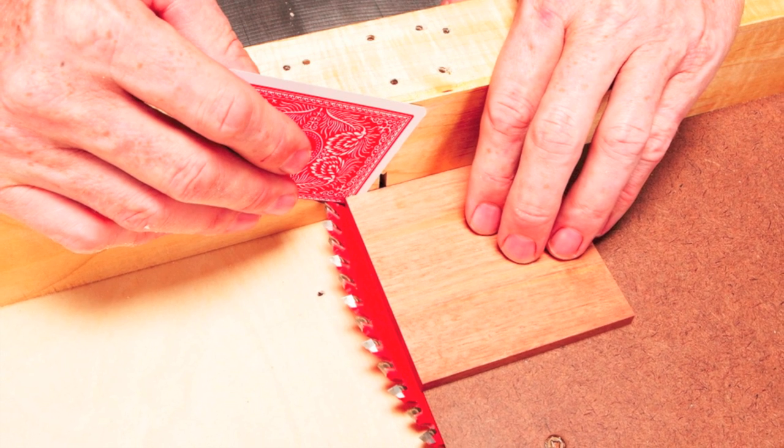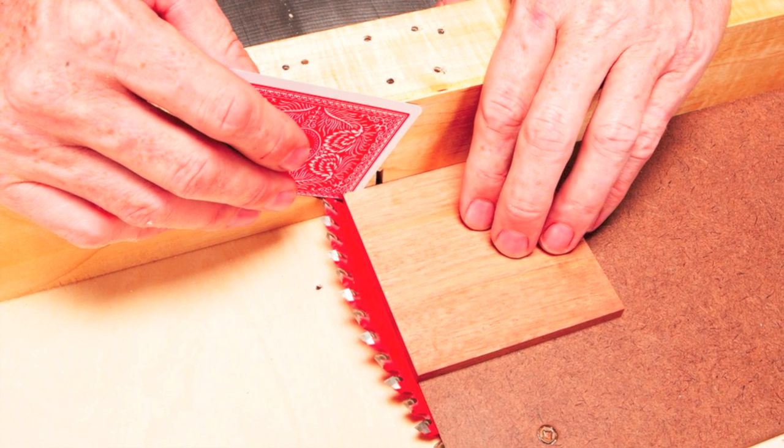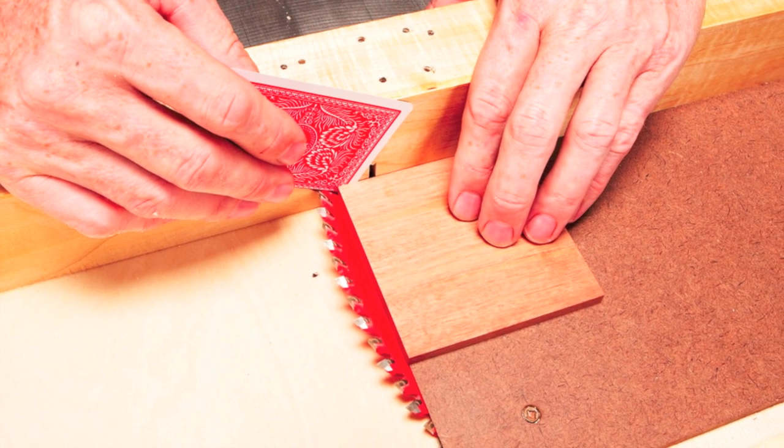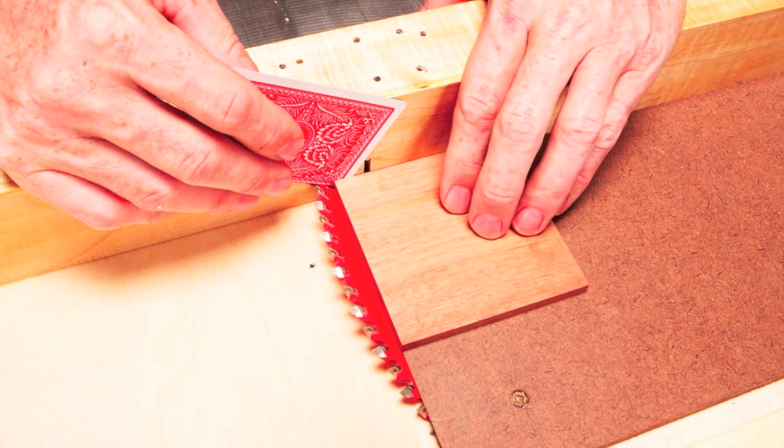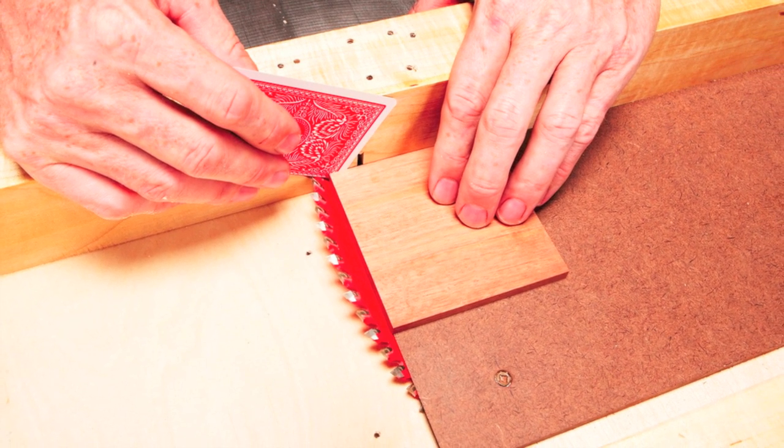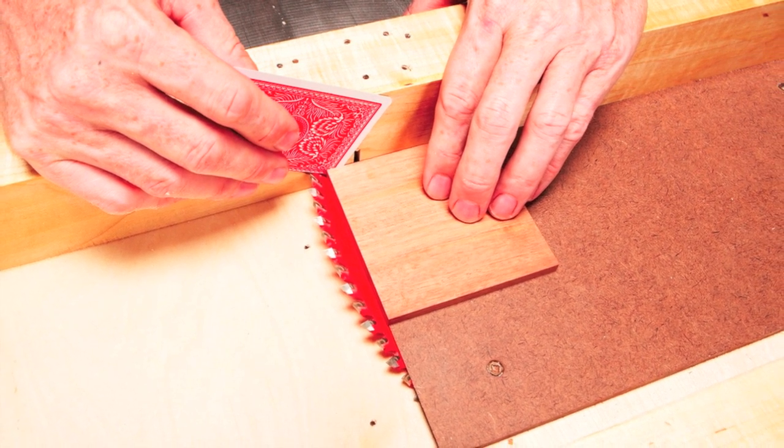On many contractor saws, the blade moves out of square when it's tilted. Hold a whiffle piece against the blade and fence. Tape a shim to the fence if there's a gap at one corner. Ideally, you'd realign your saw to make it cut square, but this quick fix works well for this project.